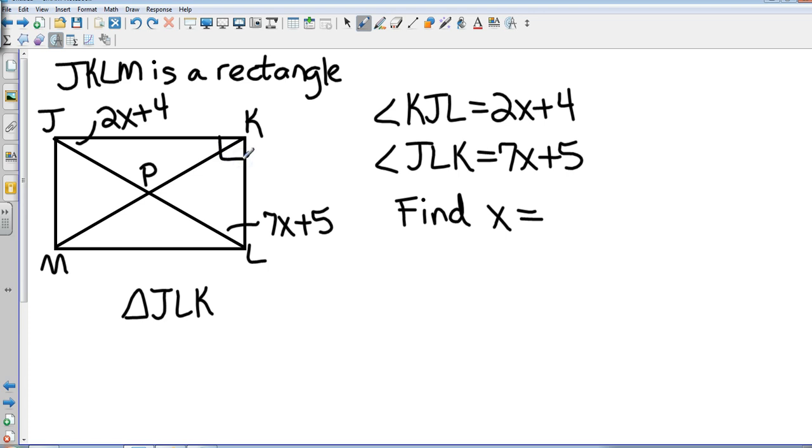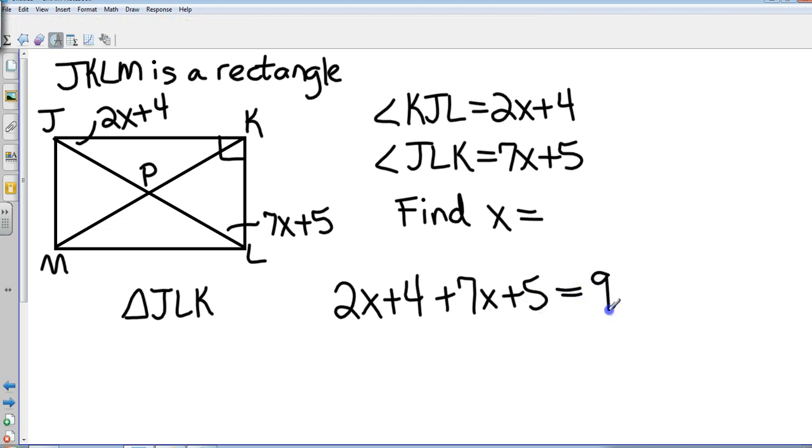So I'm going to eliminate that from the equation, and I'm going to add 2x plus 4 and 7x plus 5, and that's going to equal the remainder of the 180 degrees, which is going to be 90.